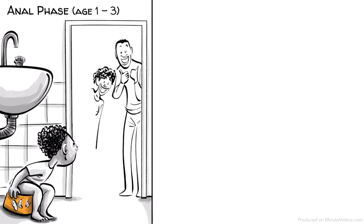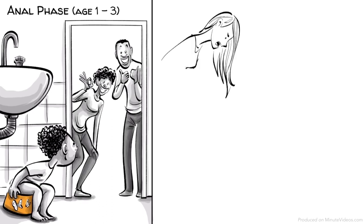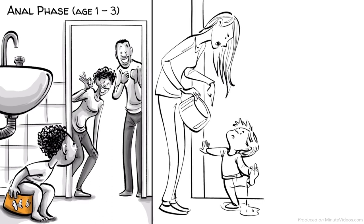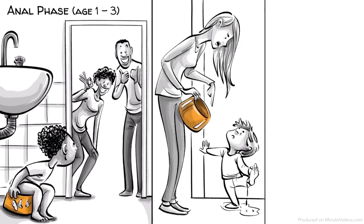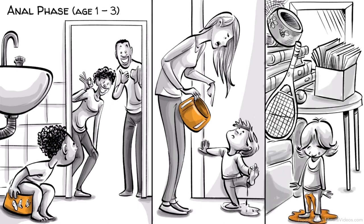Hans's parents praise his attempts to use the toilet and encourage him to learn at his own pace. Ernst's parents force potty training on him too early and punish him for mistakes. Ida's parents neglect any efforts at potty training entirely.